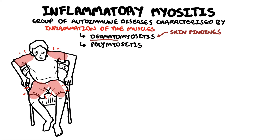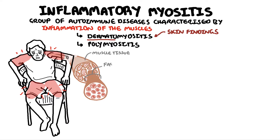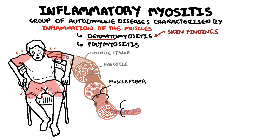Let's recap the function and anatomy of the muscle. Muscle is a specialized tissue found in animals, designed to generate force and motion. The muscle tissue is composed of muscle cells called muscle fibers, which are elongated and designed to contract in response to stimulation. These fibers are made up of smaller units called myofibrils, which in turn are composed of even smaller structures called sarcomeres. The sarcomere is the functional unit of the muscle fibers and is responsible for muscle contraction.